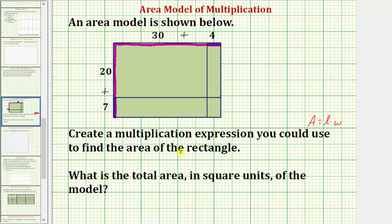There's more than one way to give the expression for the area of the rectangle. So one way would be to have the length of 30 plus four in parenthesis, times the width in parenthesis as 20 plus seven. This would be one way to give an expression that would give the area of the rectangle. Another option would be just to write 34 times 27. Both of these would be correct.